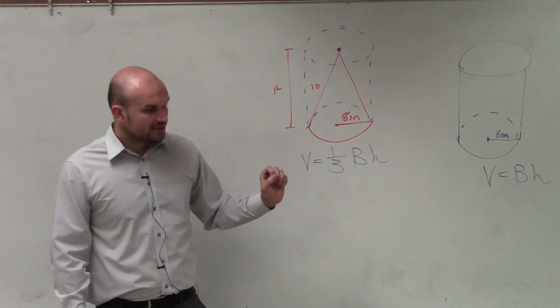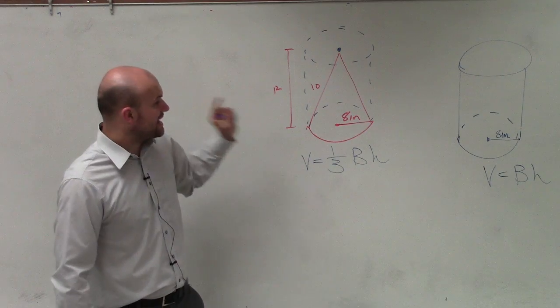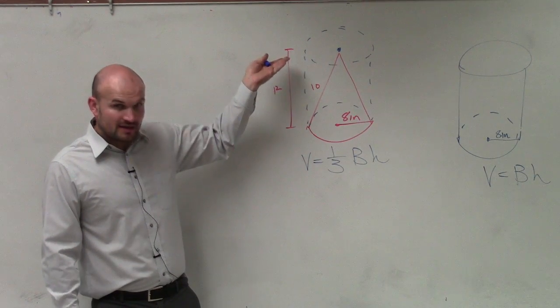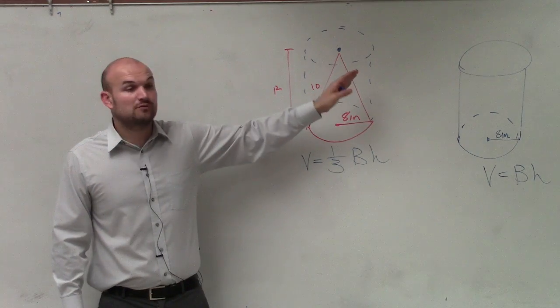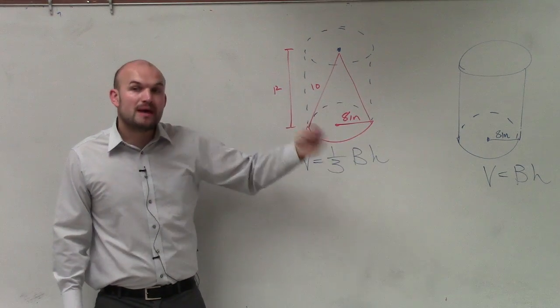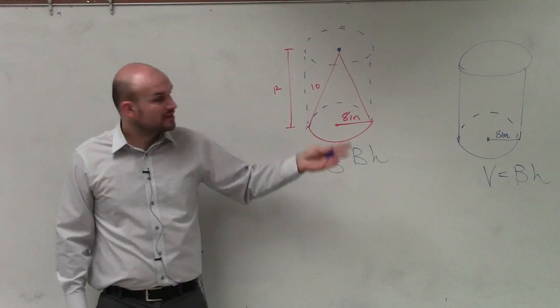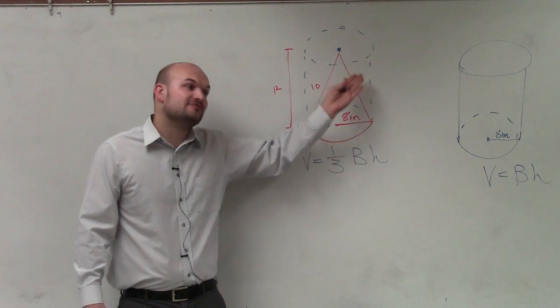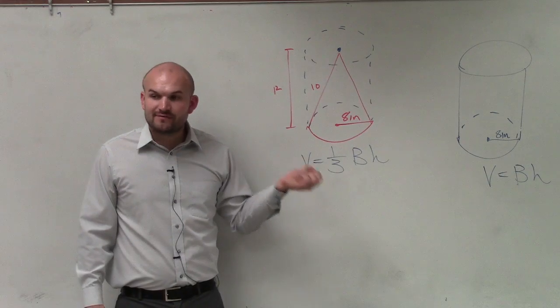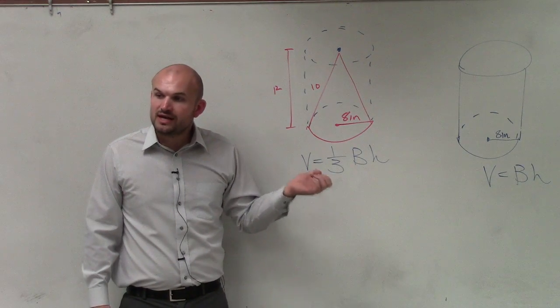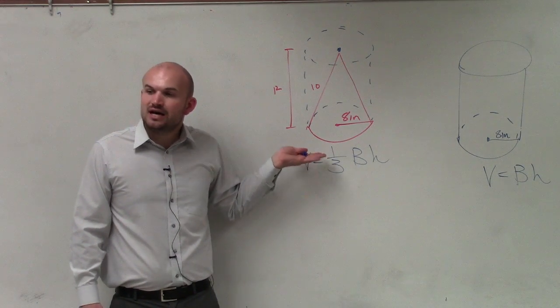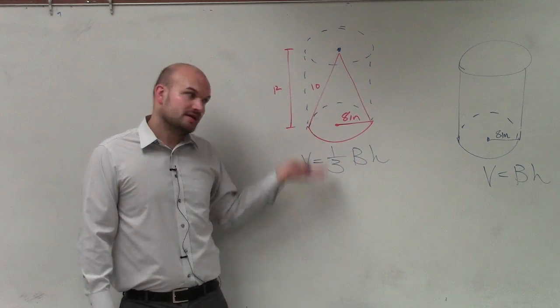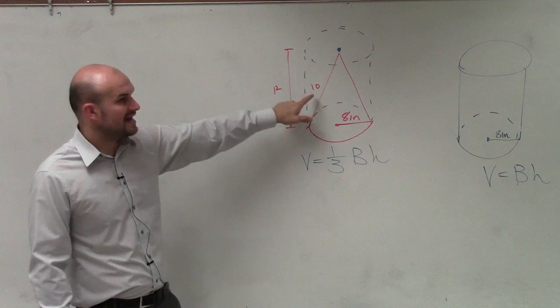The other thing that's important to understand is we have two lengths, or two heights. We have the height of the figure as well as the height of the side, which is our slant height. Remember, for surface area, we had to use the slant height. So if you're not provided the slant height, you had to find it for surface area. However, for volume, the only height we are concerned with is the height of the figure. So we're going to use 12, not 10 as the height.